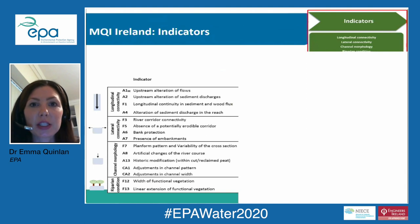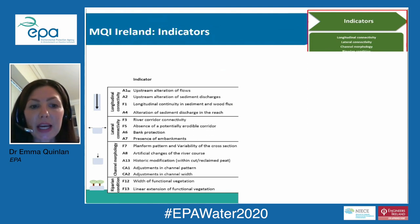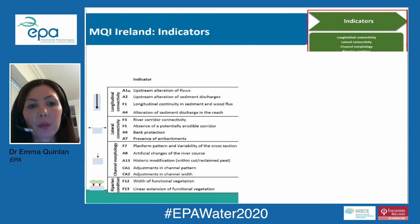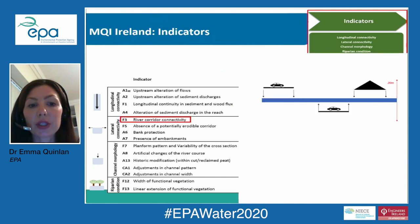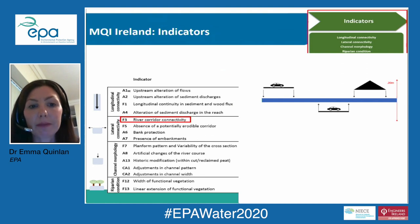The MQI Ireland tool has 15 indicators. We have four indicators looking at longitudinal connectivity — the movement of water and sediment along the channel — and four indicators looking at lateral connectivity, which looks at activities outside the channel. As an example, we have an indicator looking at river corridor connectivity, examining development or hard surfaces such as roads and buildings within the river corridor.